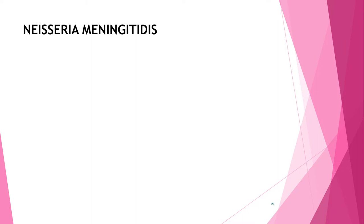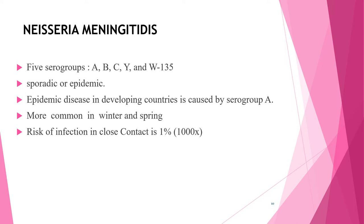Neisseria meningitidis is another important etiology above two months. There are several serogroups — A, B, C, X, Y, and W-135 — responsible for invasive disease in humans. Meningococcal meningitis may be sporadic or occur in major epidemics, particularly in the African meningitis belt where serogroup A accounts for 80–85% of outbreaks. Cases are more common in winter and spring, likely due to association with viral infections including influenza.